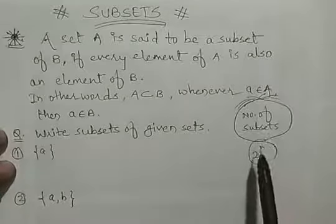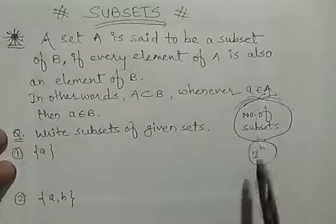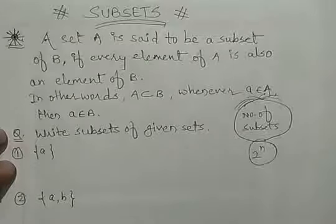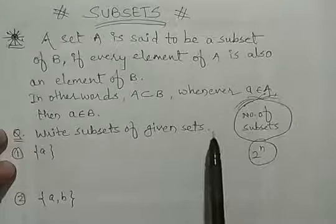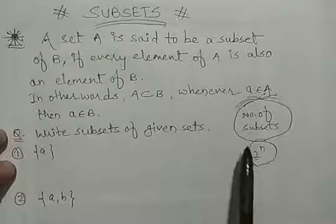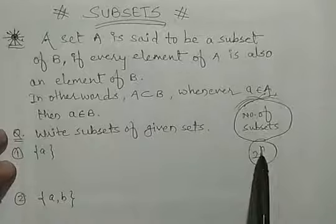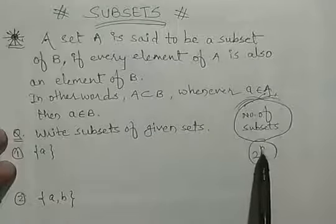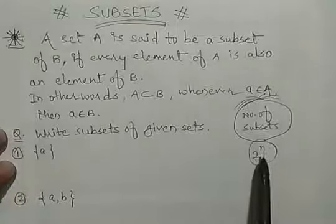अगर हमें find out करना है कि किसी set के number of subsets कितने होंगे, तो अगर किसी set में number of elements N हैं, तो 2 to the power N करके हम number of subsets निकाल सकते हैं.